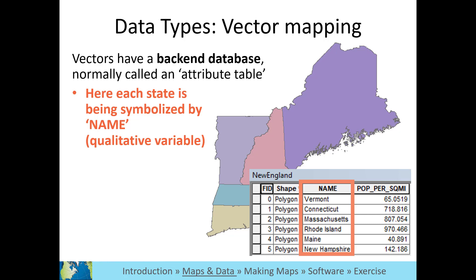Here the map was color-coded based on a qualitative or categorical variable, state name, where each unique state name was symbolized by a different color.